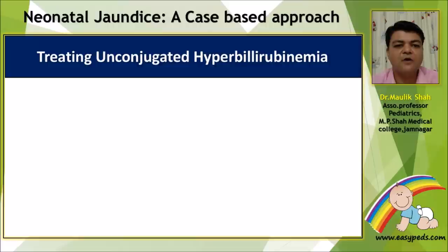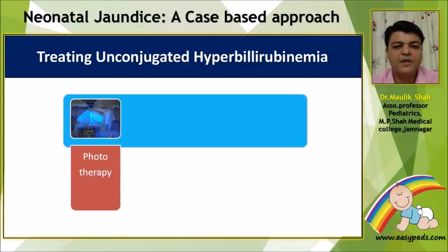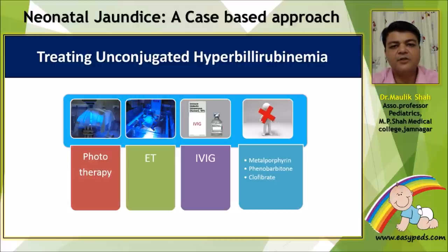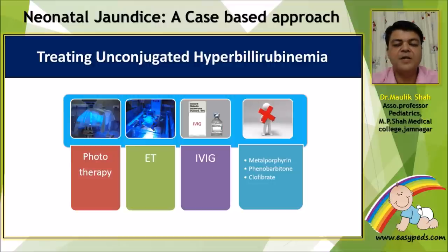When treating unconjugated hyperbilirubinemia, there are four different modalities. Number one is phototherapy — the standard, age-old therapy. Number two is exchange transfusion, where we change the blood of the baby. Third is IVIG, which was discussed in Part 1 of this webinar series. Last are experimental treatments with not much evidence: metalloporphyrins, phenobarbitone, and clofibrate. We request not to use them until the evidence is available.